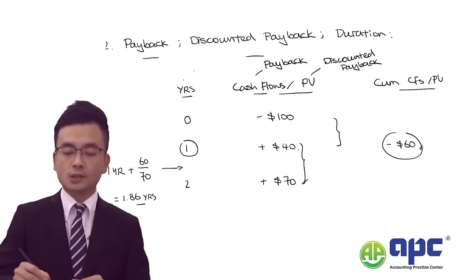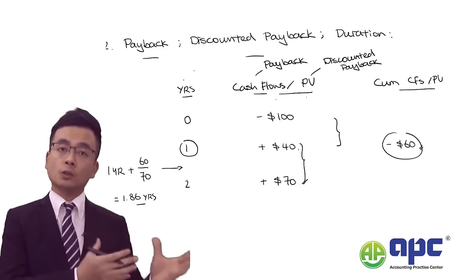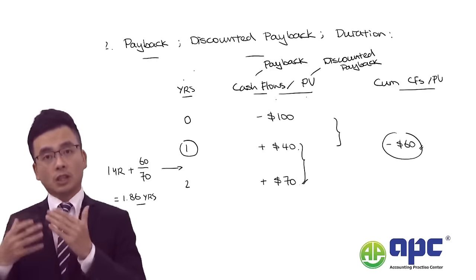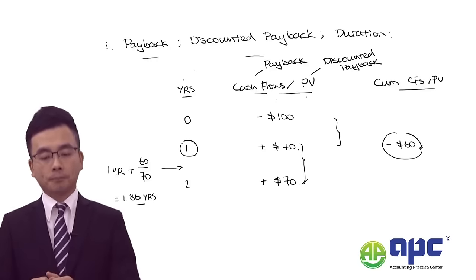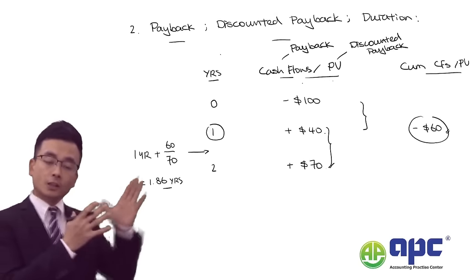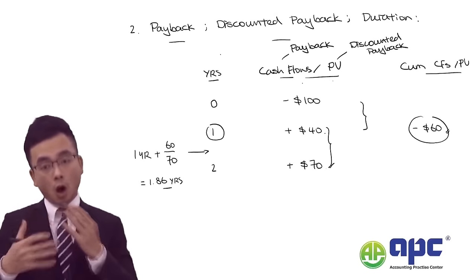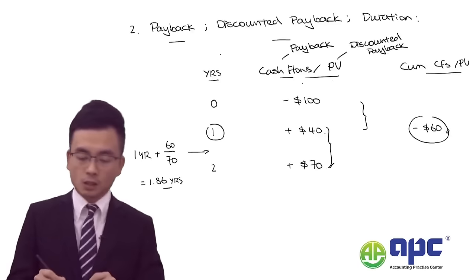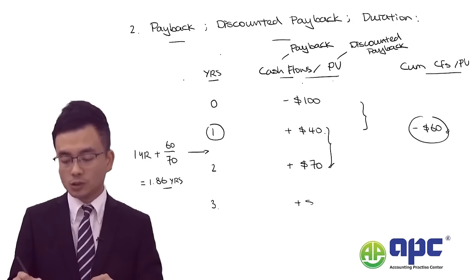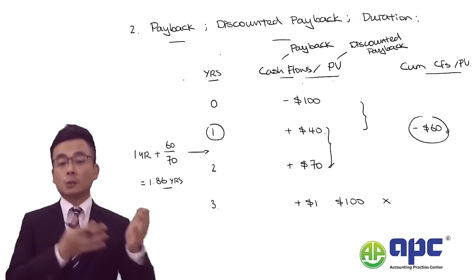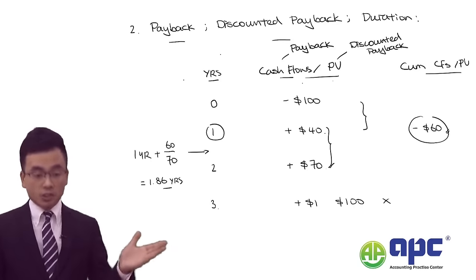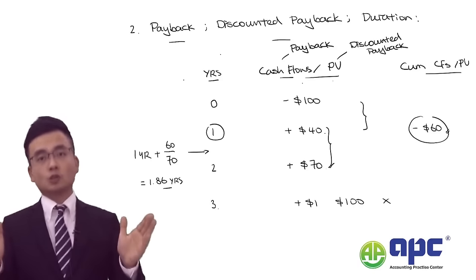The $40 and $70 can either be actual cash flows or present values, depending on whether you're using payback or discounted payback (considering the time value of money / interest effect). The discounted payback will be different from the duration concept because payback only tells you when your initial investment pays back — it does not consider cash flows beyond the payback point.